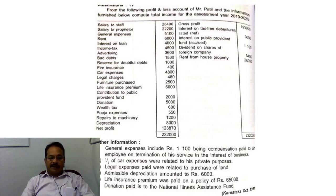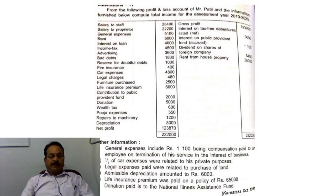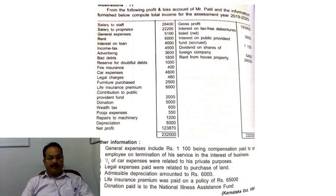The gross profit indicates the assessee has income under the head business. Then there is interest on tax-free debentures, taxable under the head income from other sources. Interest on Public Provident Fund is an exempted income. Dividend on shares of a foreign company is also taxable under income from other sources. Lastly, rent from house property indicates income under the head house property. So the assessee has income under business, house property, and other sources — we have to calculate his income under all three heads.